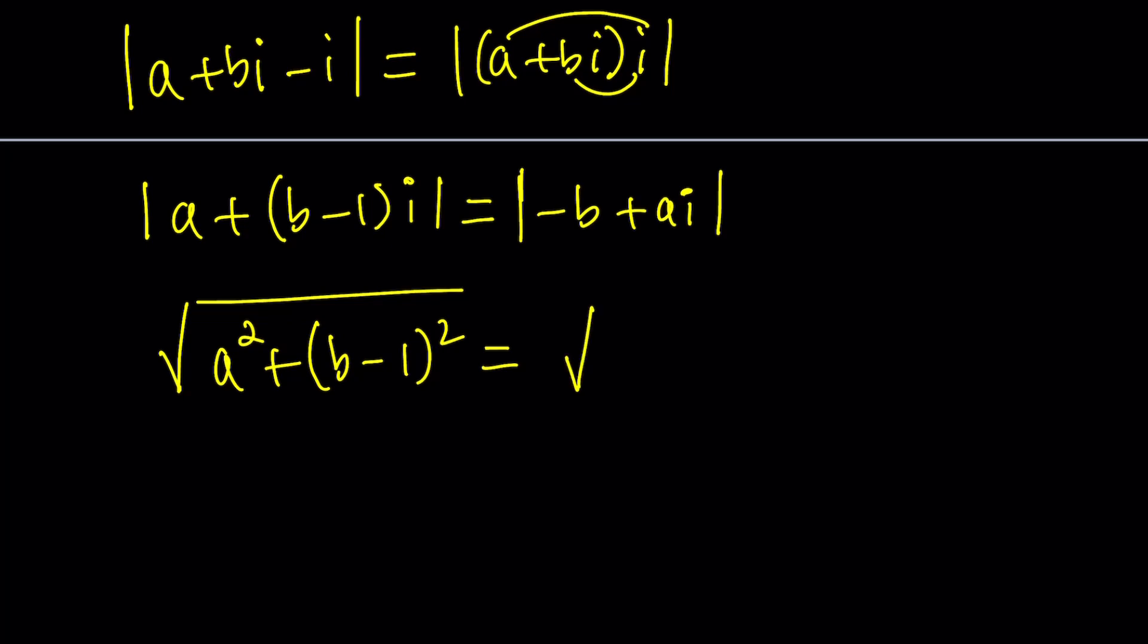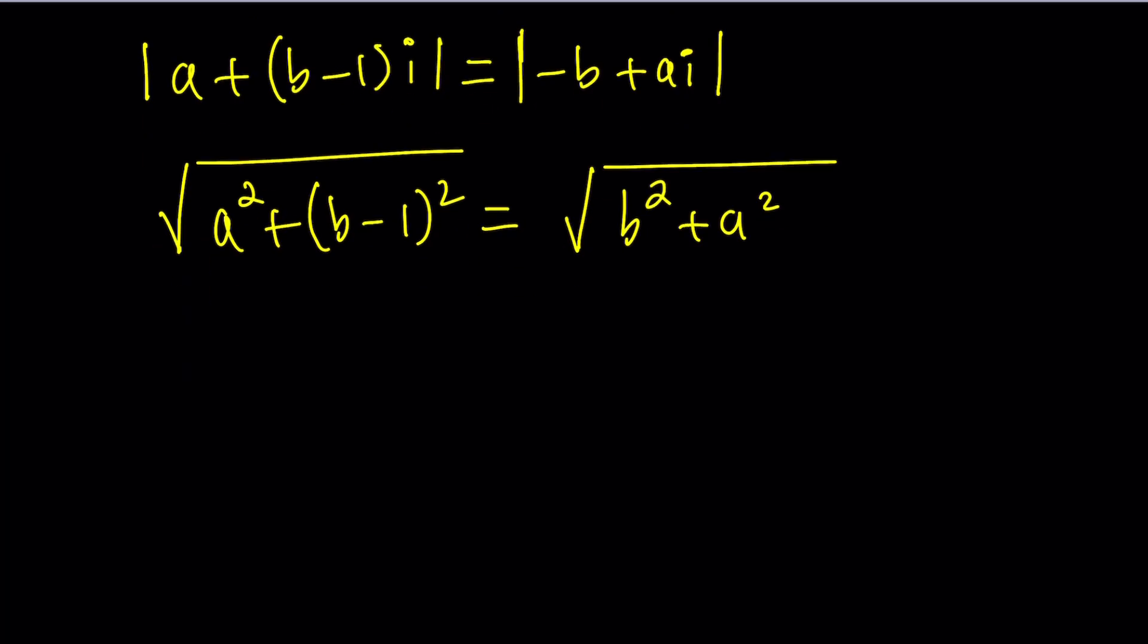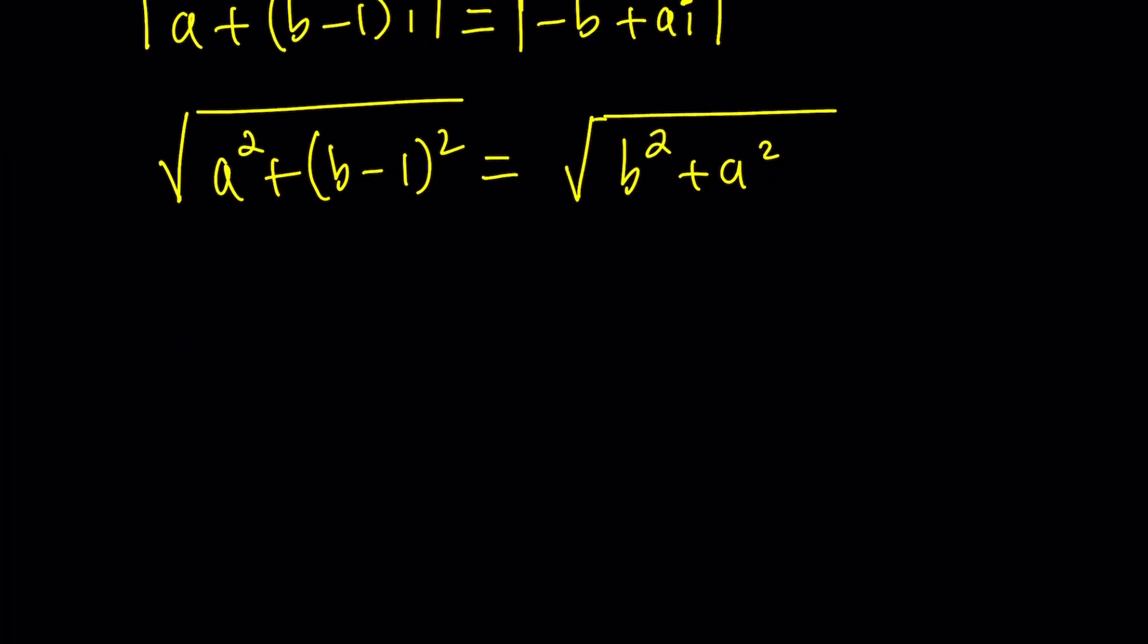So, negative B squared is just B squared plus A squared. Let's go ahead and square both sides. The square roots cancel out. And then we end up with A squared. And let's expand this. B squared minus 2B, or not 2B, allow me to make that joke once in a while. Equals B squared plus A squared. So A squared plus B squared cancels out. Very nice. This is super simple.